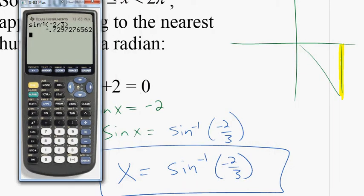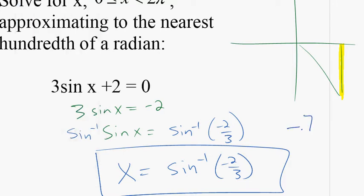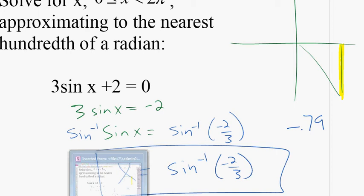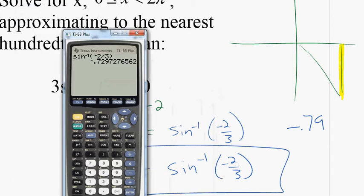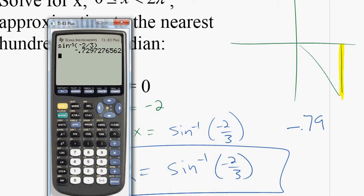So what does that mean? Negative 0.79, what was it? Yeah, we want to do it to the nearest hundredth, right? So we've got to round up. Negative 0.73.